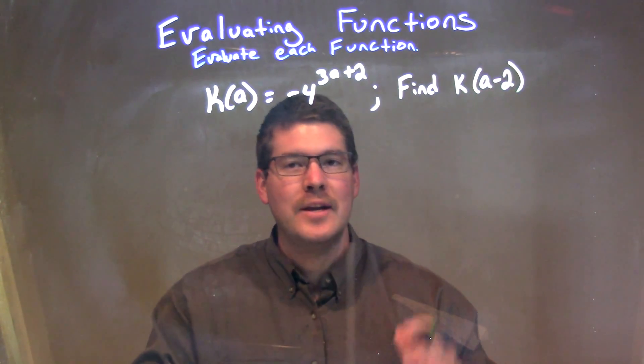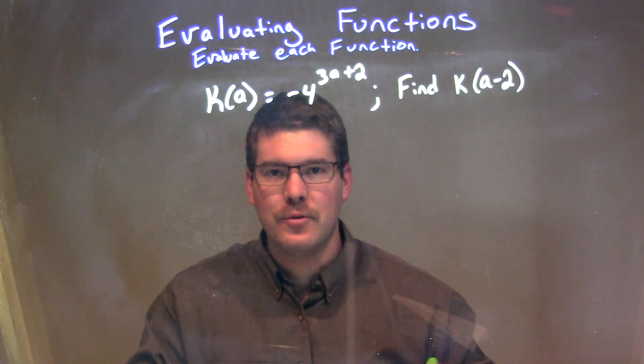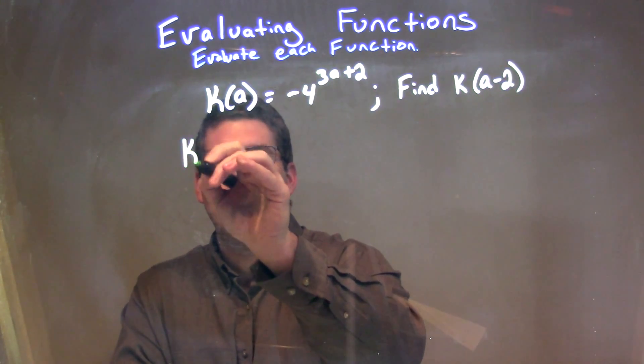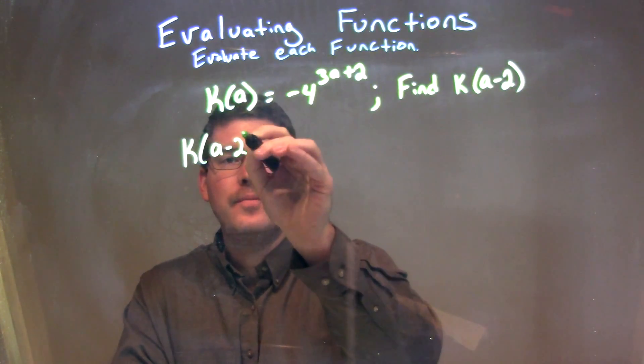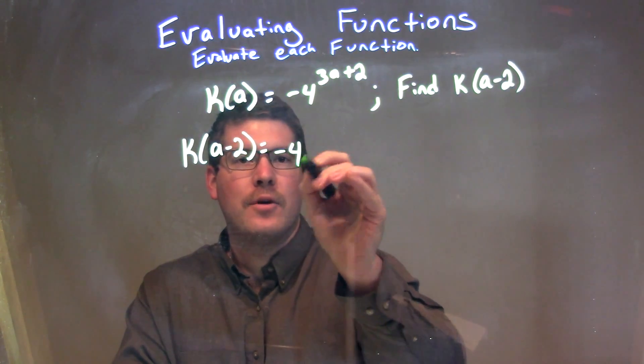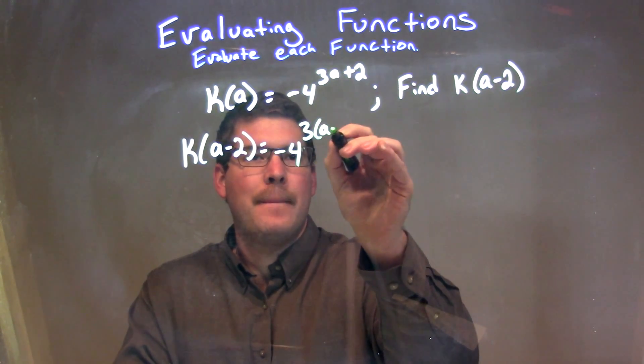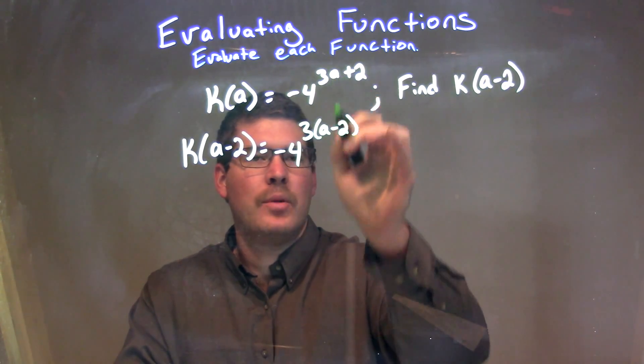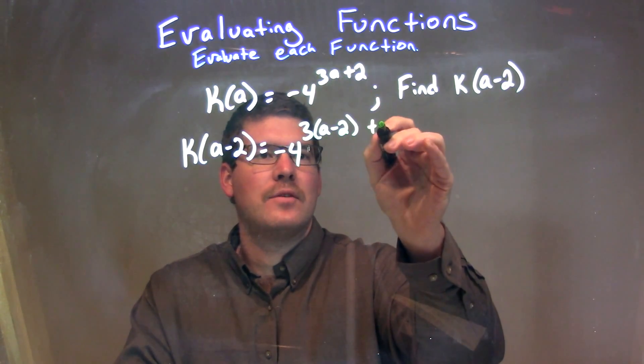Every single time we see an a, we need to plug in an a minus 2. So, we have k here of a minus 2 is equal to negative 4 to the 3 times a minus 2 power. Remember that a, we plug in an a minus 2, then we have plus 2.